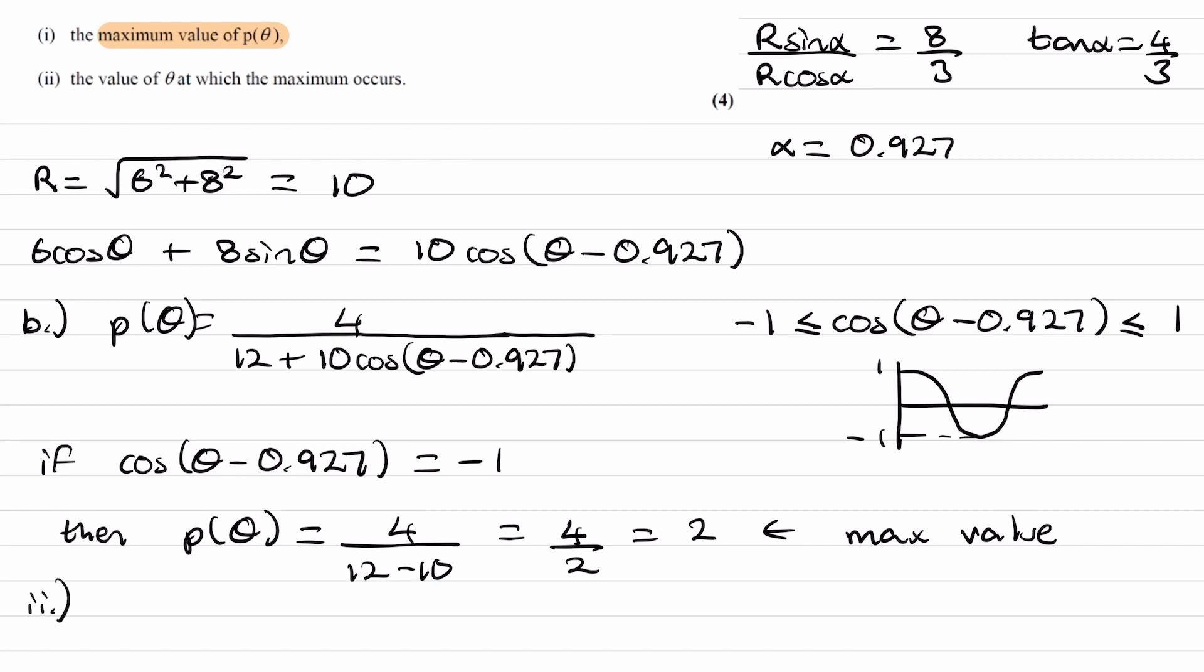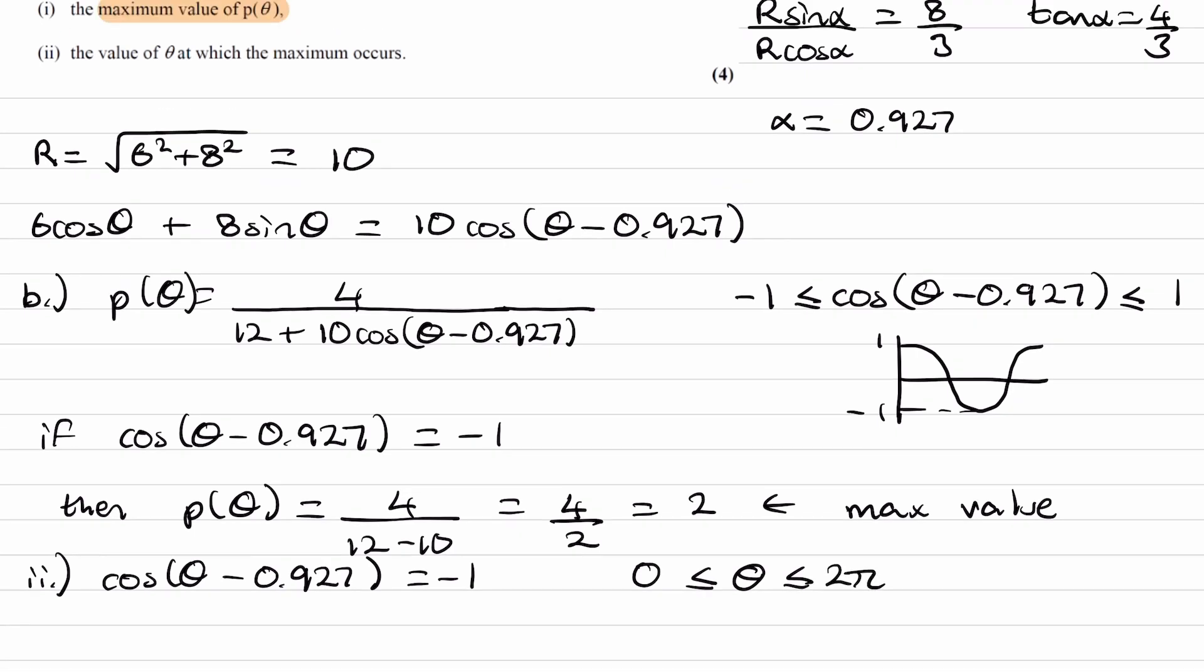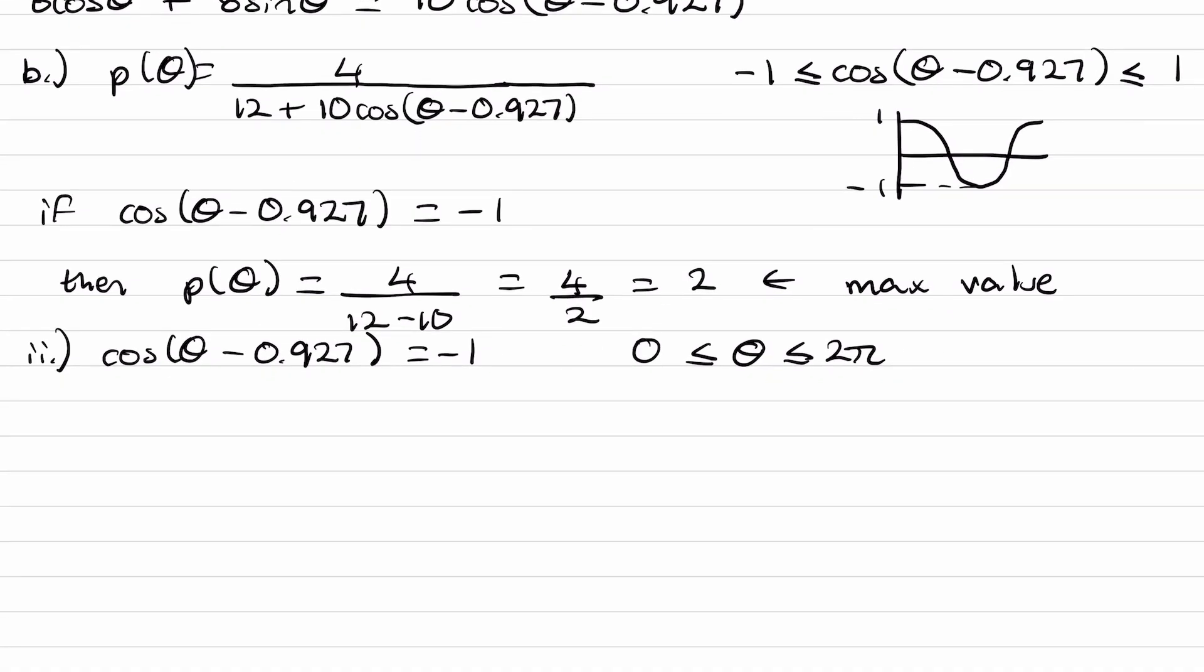And then for part 2, we're trying to work out the value of theta at which the maximum occurs. So remember that we set cos theta to be equal to, or cos theta minus 0.927, we set this equal to minus 1, and when we do that, we end up with the maximum value of p theta. So if we solve this equation for theta, we end up with the value of theta when the maximum occurs. Our interval before was 0 to 2 pi. That's what we had here. So then inside our bracket, we have theta minus 0.927. So I'll take away 0.927 from both of these values. We get minus 0.927 is less than or equal to theta minus 0.927, which is less than or equal to 5.356.